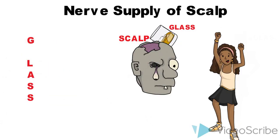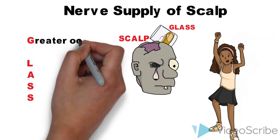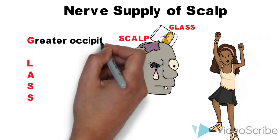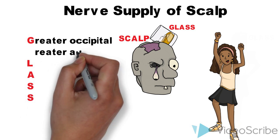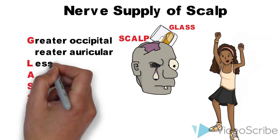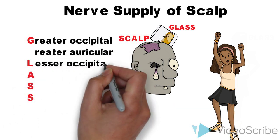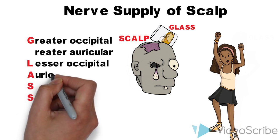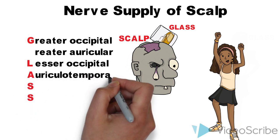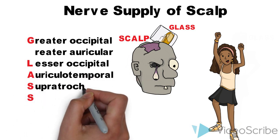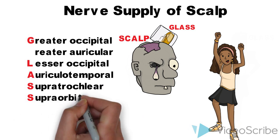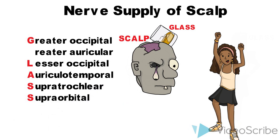The mnemonic for the names of the nerves supplying the scalp is GLASS, where G stands for greater occipital and greater auricular, L for lesser occipital, A for auriculotemporal, S for supratrochlear, and the second S for supraorbital.